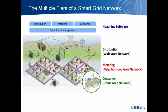This converged network with multiple different organizations results in multiple distinct communication tiers. For consumer networking, we focus on what's called a Home Area Network, providing communications within the home to devices like meters, in-home displays, thermostats, and direct load controls. The Neighborhood Area Network provides communication between meters to automate meter reading and enable advanced metering applications. The distribution network is tied into the Wide Area Networking tier, providing long-range communications that connect substations and other distribution devices. All of this gets provided back to the head-end software for the different organizations.